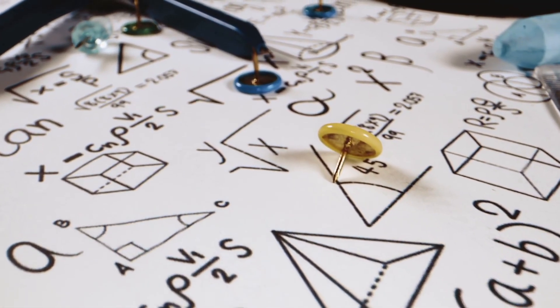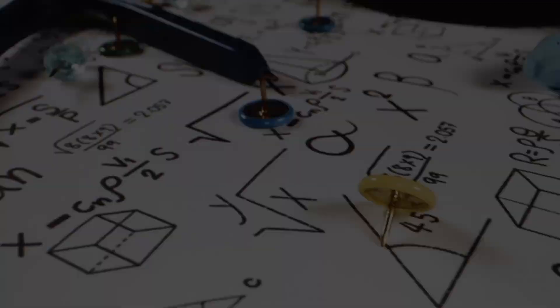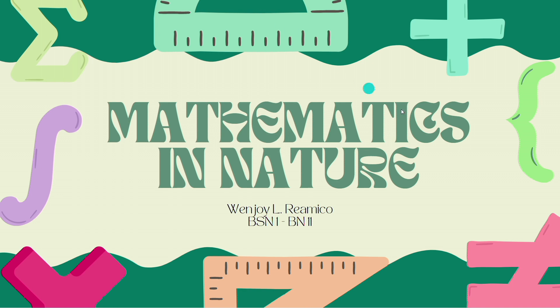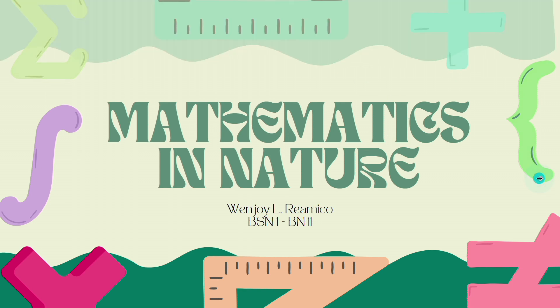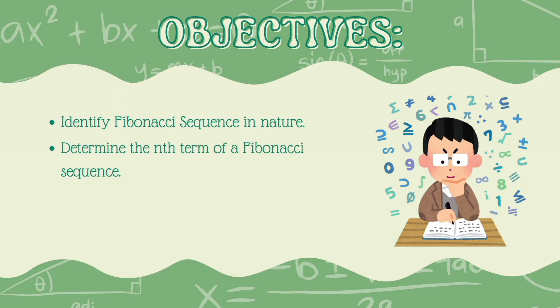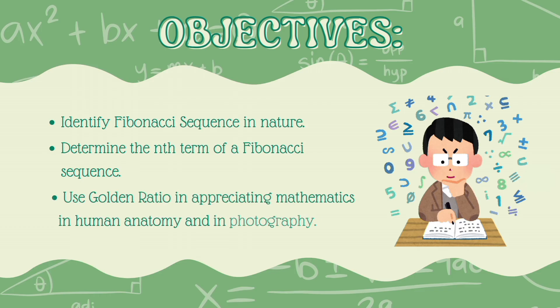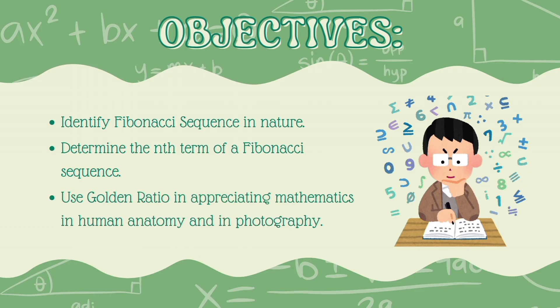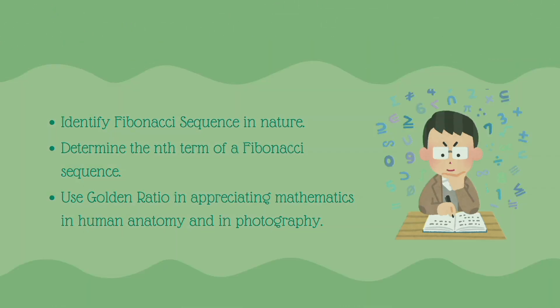Before going to our discussion, we're going to find objectives for today. Our objective for today is to identify Fibonacci sequence in nature, determine the nth term of a Fibonacci sequence, and lastly, use golden ratio in appreciating mathematics in human anatomy and photography.